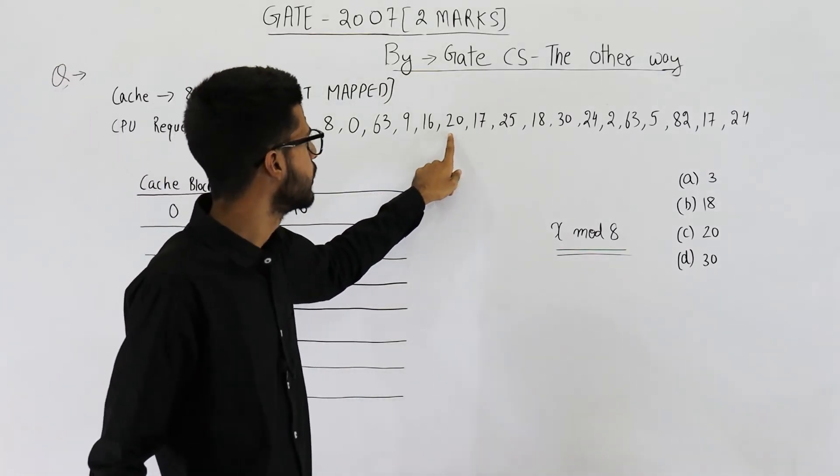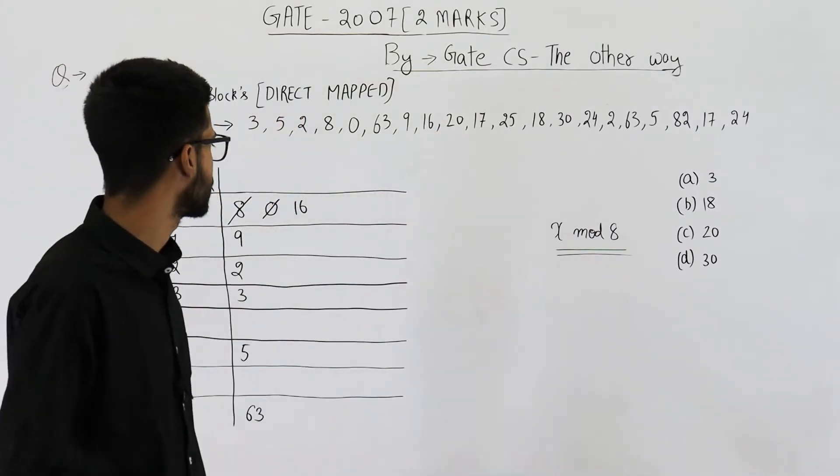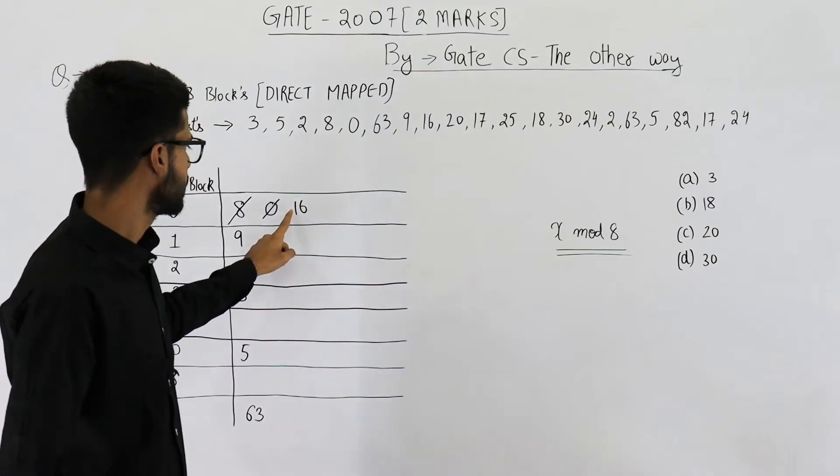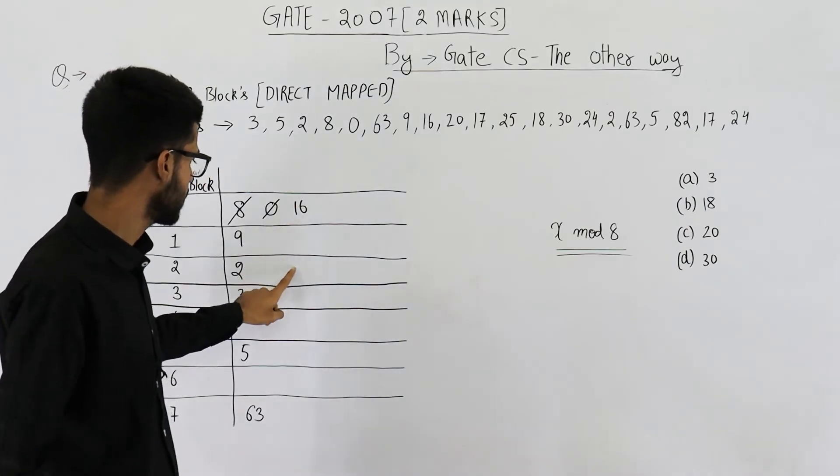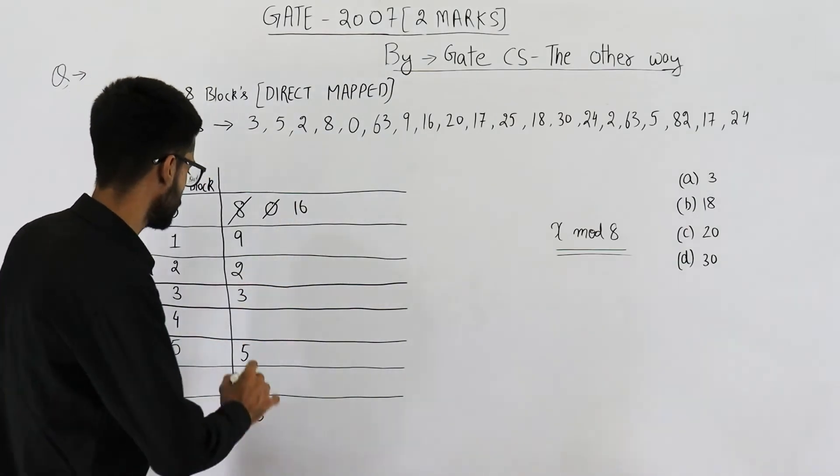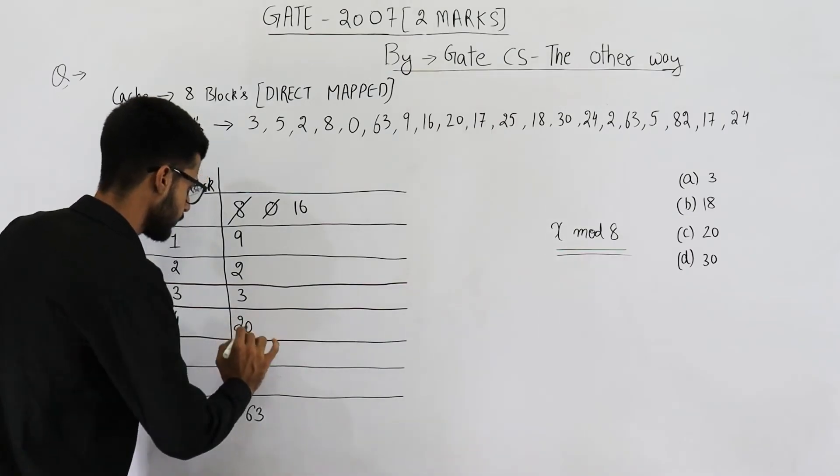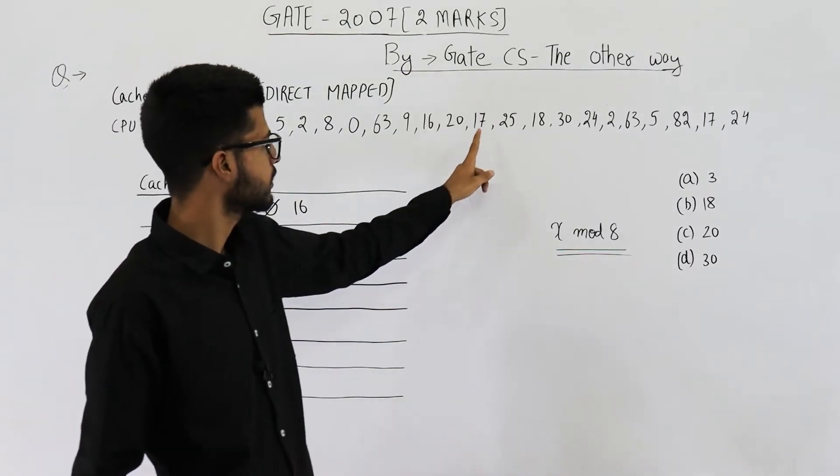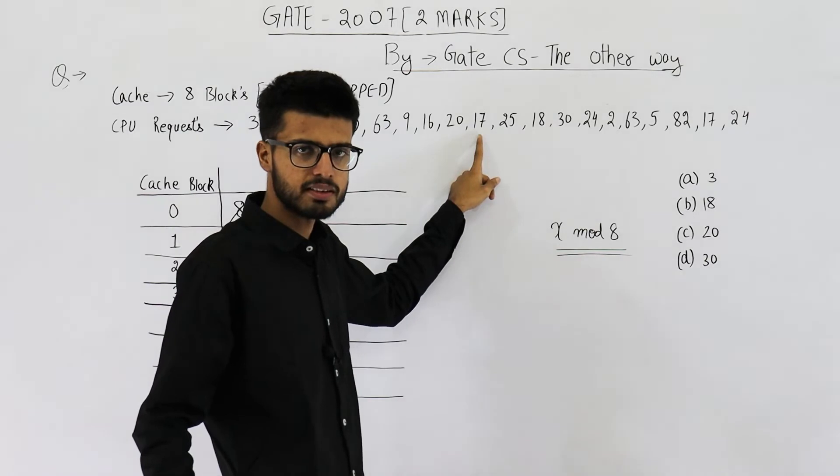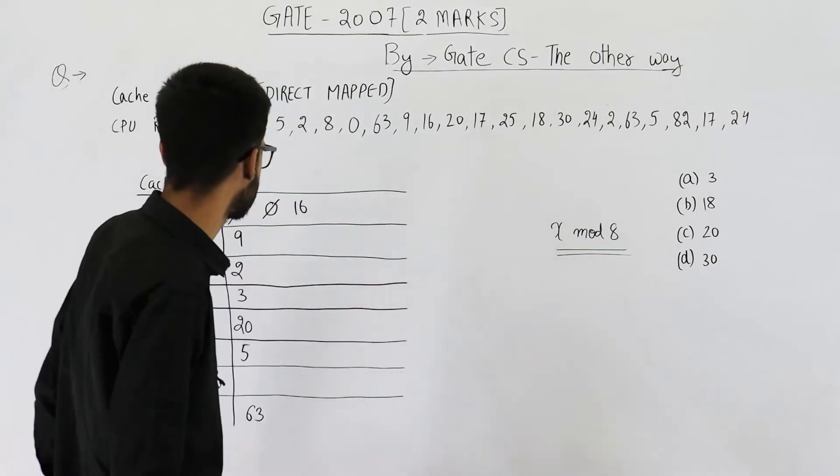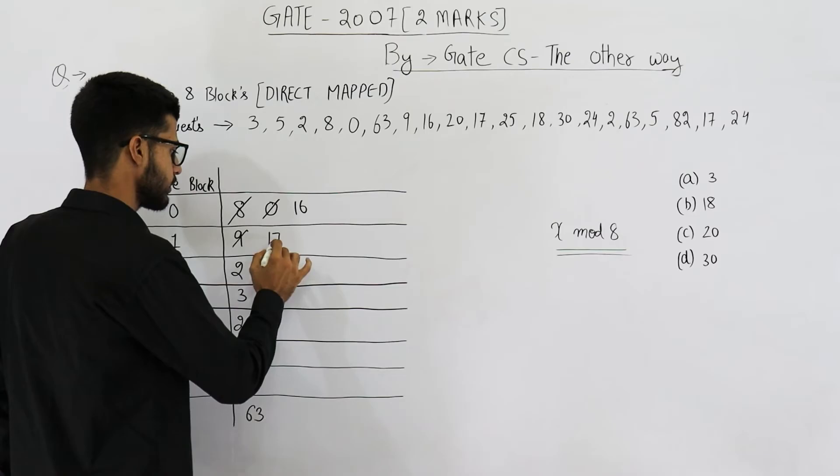Next one is 20. 20 is not a multiple of 8. Where will 20 go? 16 is here, 17, 18, 19, 20. So 20 will be placed here. Next one is 17. 8 twos are 16 and for 17 the remainder will be 1. So you will place 17 here.